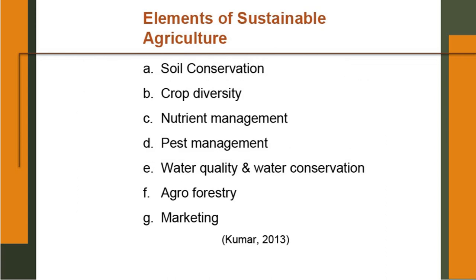Elements of sustainable agriculture include soil conservation — there may be some soil erosion, but efforts should be made to conserve the soil. Crop diversity is very necessary if we want to sustain our productivity. Nutrient management should be based upon natural principles and there should be very less use of chemical fertilizers. Pest management — ideally integrated pest management. Water quality and water conservation are very necessary. Agroforestry can be an integral part because it can act as a sink for atmospheric carbon, can reduce pollution, and if you have multi-purpose trees they will have multi-purpose uses helping to increase farmers' income and marketing.